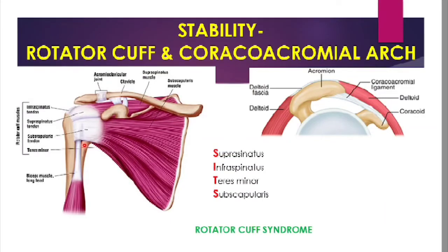The coracoacromial arch provides a secondary socket for the joint superiorly. It includes the tip of the acromion, the lateral surface of the coracoid process, and the coracoacromial ligament connecting both structures. Together these form the coracoacromial arch, which prevents upward dislocation of the shoulder joint during abduction. Remember: the two main factors maintaining stability of the shoulder joint are the musculotendinous rotator cuff and the coracoacromial arch.